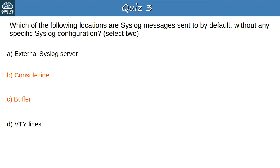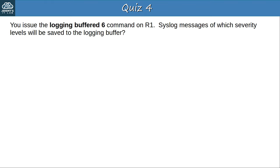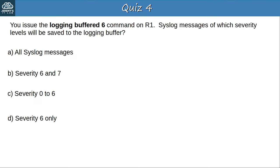Question 4: You issue the 'logging buffered 6' command on R1. Syslog messages of which severity levels will be saved to the logging buffer? The answer is C, severity 0 to 6. When you specify a level of log messages, all messages of that level and higher severity — meaning numerically lower, because the lower numbers are more severe — will be displayed or saved to the buffer.